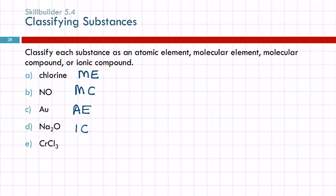How about CrCl3? It's a compound. Is chromium a metal? Yes. So this is ionic. Ionic compound. Any questions?